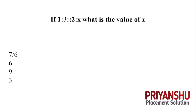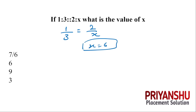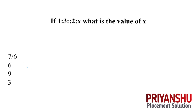If 1:3 = 2:x, what is the value of x? X is nothing but 6. The answer is 6.